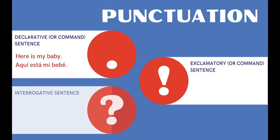Now if you're wondering about periods, periods are not at the beginning of a sentence and at the end. So you can just take it for granted that if there's no upside-down question mark or upside-down exclamation mark at the beginning of a sentence, it's going to be a statement or a declarative sentence. So that's the quick and dirty about punctuation — hope that helps! Adios amigos, bye friends!